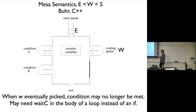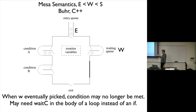When W is eventually picked, the condition may no longer be met — the condition by which a process moved from a condition queue to the waiting queue may no longer hold, because the signaler might have executed more code in the meantime. So you may need to put wait(c) in the body of a while loop instead of an if statement. I'll show an example of this in a minute.